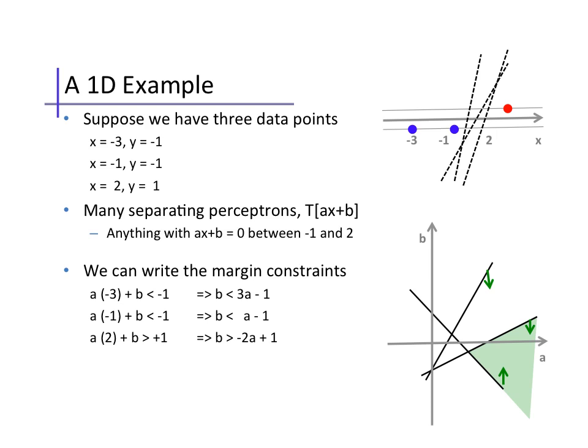So, the set of parameters that satisfy our margin constraints is shown in shaded green. Notice that, as one would expect, the constraint here, for x equals minus 3, is superseded by the constraint here, for x equals minus 1.